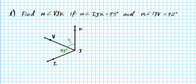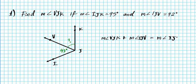If we want to use the Angle Addition Postulate, we can say that the measure of angle VJK — the unknown angle we are looking for — plus the measure of the other angle, angle IJV, equals the entire angle, which is the measure of angle IJK. Now that we have a relationship between these three angles using the Angle Addition Postulate, we are going to carry out a substitution.